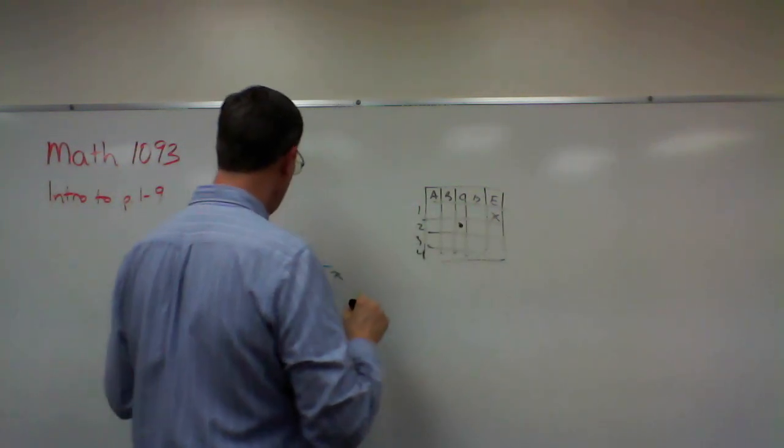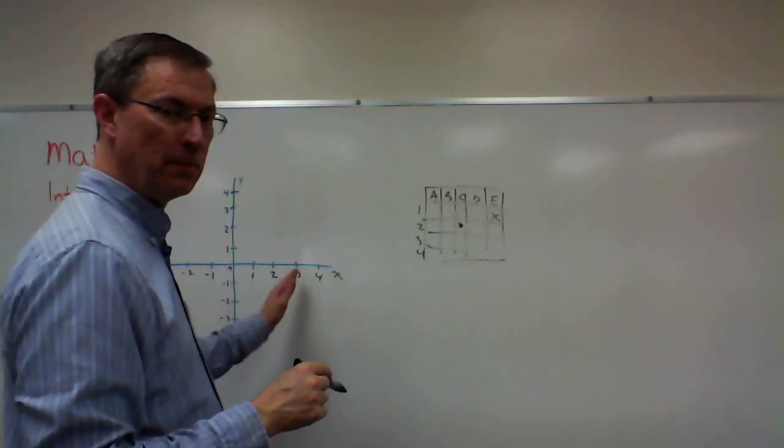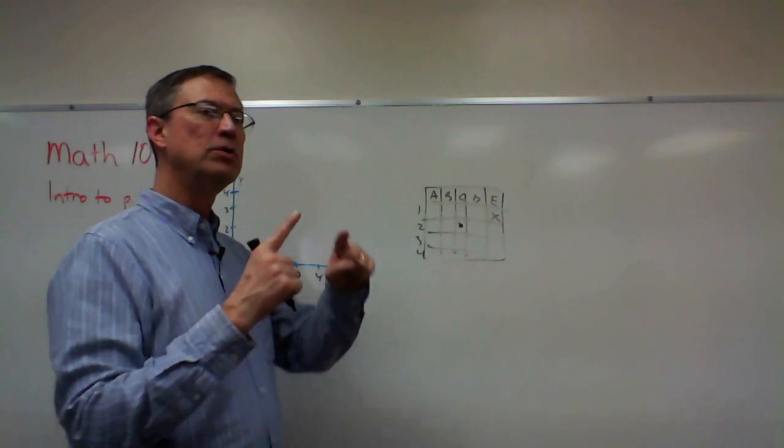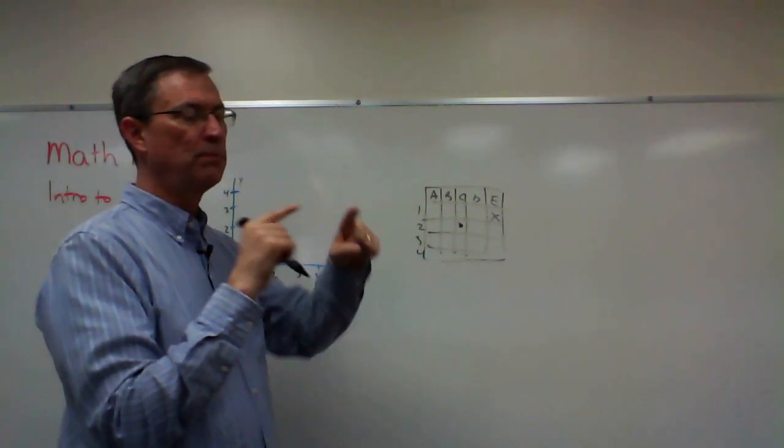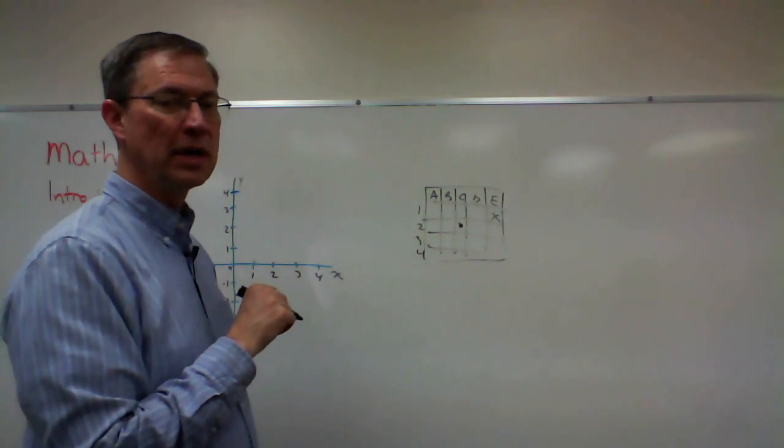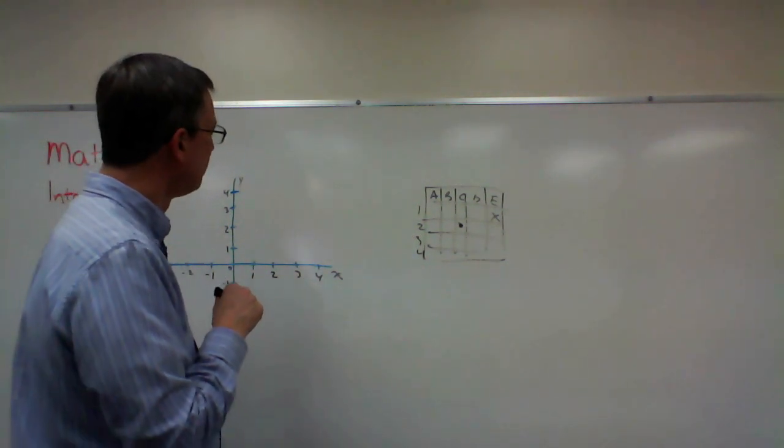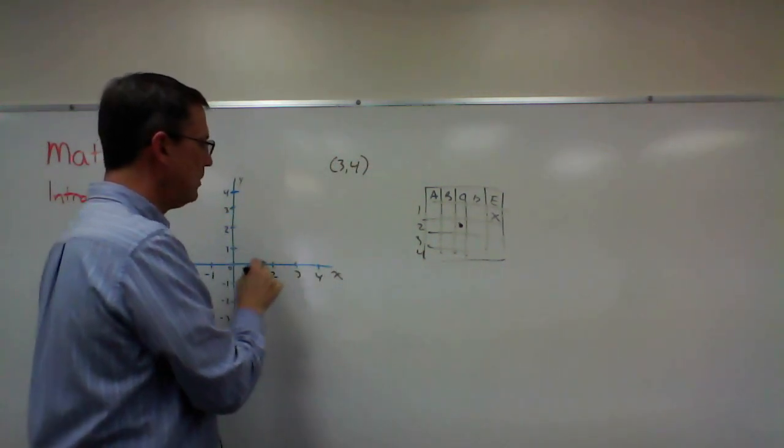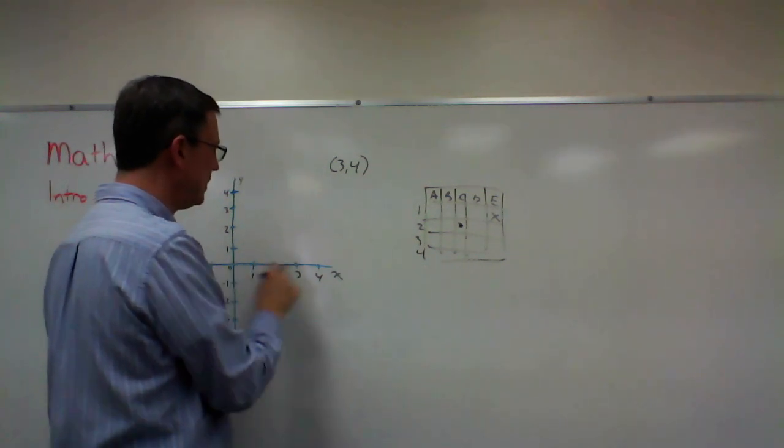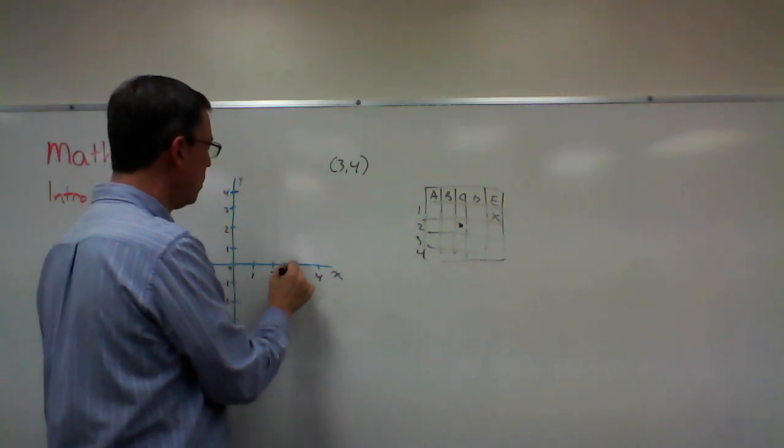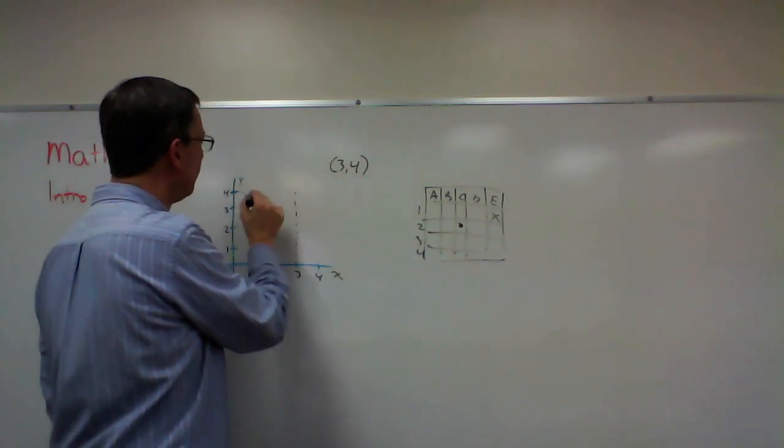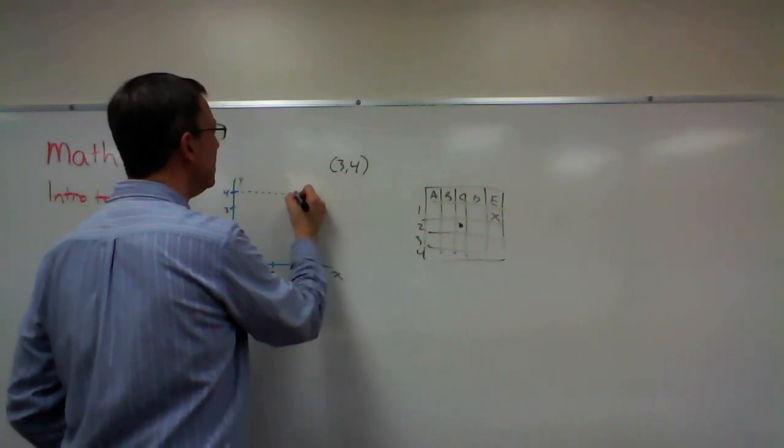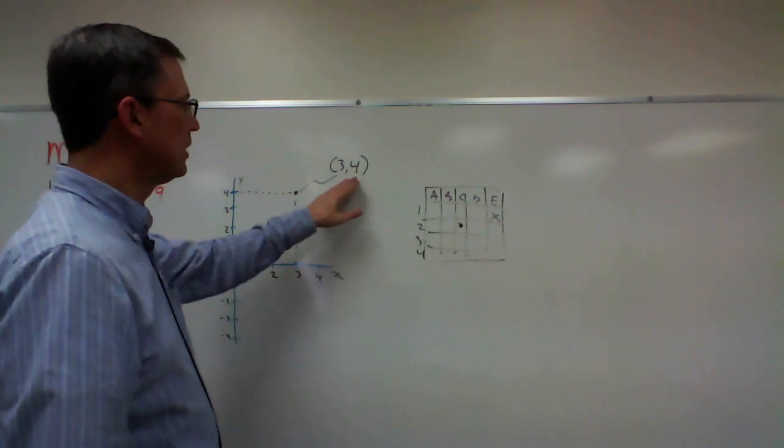Well we do something similar when we're naming points. Okay we look across here first to find the number and then we go this direction and we find a number and then where those two numbers intersect that spot is the address or the coordinate we call it for that point. So let's say I want to find the point 3 4. What that means is I go out here to 3 on this axis and then I go up to where the 4 comes across and that crosshairs right there where those two lines meet. That point is the address of that point 3 4.